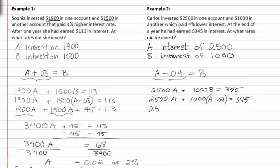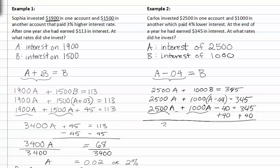Distributing through, we get 1,000 A minus 40. Adding 40 to both sides, we get adding like terms, we get 3,500 A is equal to 385. Dividing by 3,500, A is equal to 0.11 or 11 percent.